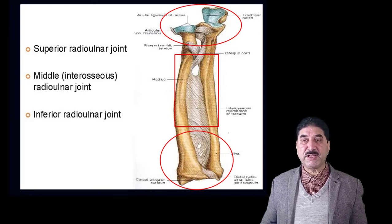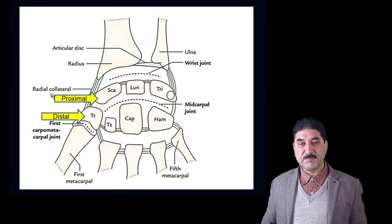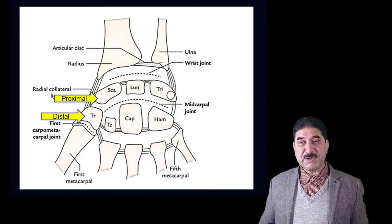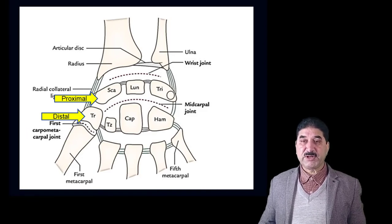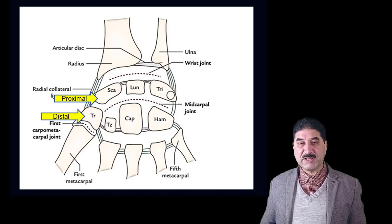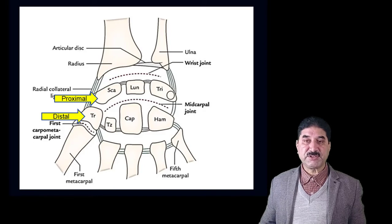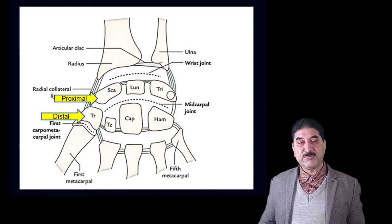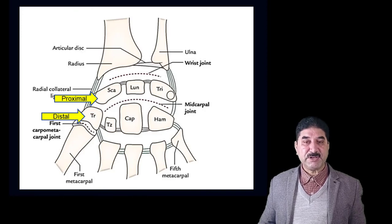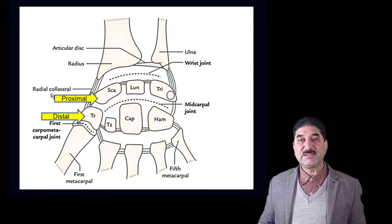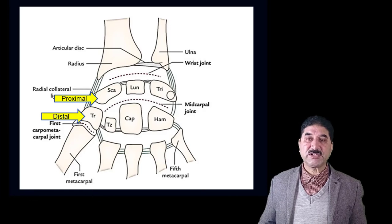In the carpus there are two rows of carpal bones. The proximal row — nearest to the trunk — contains four bones: scaphoid, lunate, triquetral, and pisiform. The distal row also contains four bones: trapezium, trapezoid, capitate, and hamate. Proximal means nearest to the trunk and distal means away from the trunk.